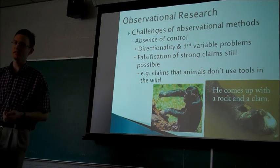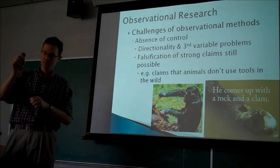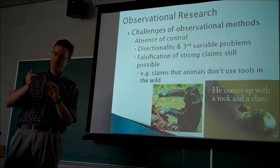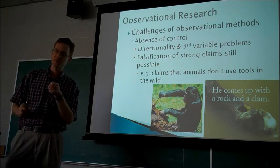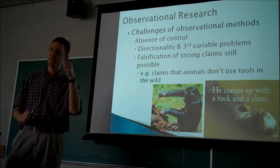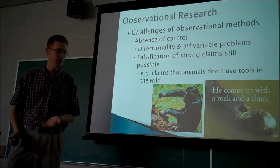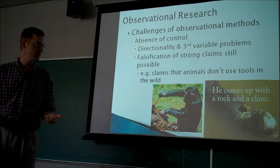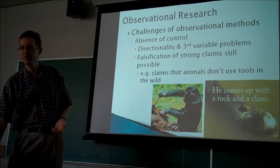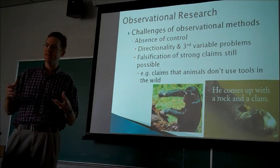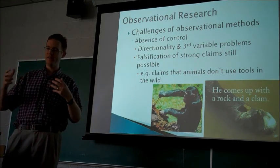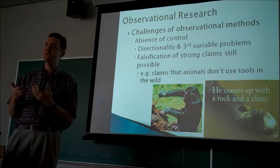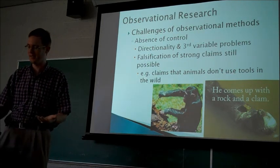One of the claims about human uniqueness that was around for a long time was that humans are the only animals that use tools. But then people went out into the wild and looked at animals and you can see some primitive forms of tool use. You can see chimpanzees that strip the bark off of twigs to reveal the sticky sap underneath and use that to fish termites out of a mound. You can even see otters that will go down to the bottom of a lake, get a rock, and use it to smash a clam open.